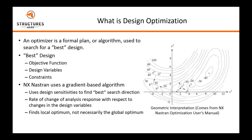The objective function could be to minimize mass or minimize cost. Design variables, as you'll see today, will be our plate thicknesses, but it could also be other geometric parameters that define the shape of your structure. Constraints are typically constraining a response of your analysis — so stress constraints, displacement constraints, frequency constraints, etc.